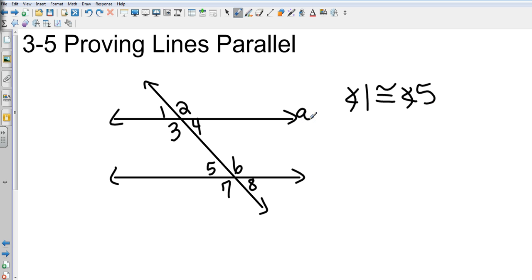Is that enough information to prove that line a is parallel to line b? We would answer that with yes, that makes them parallel. The reason is because angle 1 and angle 5 are corresponding angles, and corresponding angles are only congruent in parallel lines.